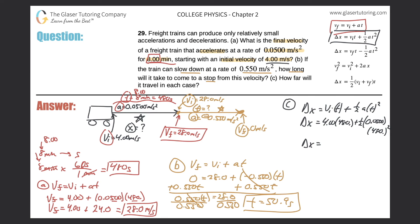I'll do the math in pieces. 4 times 480 works out to be 1920 — three significant figures, so 1920. Then plus one half times 0.05 times 480 squared gives a value of 5,760 — again three significant figures. To find the displacement, just add these two together: 1920 plus 5,760 gives a total of 7,680 meters. That's the final answer with the correct number of significant figures.